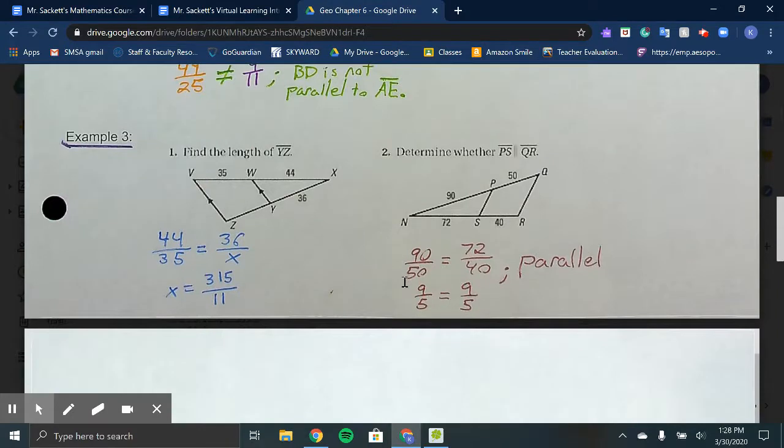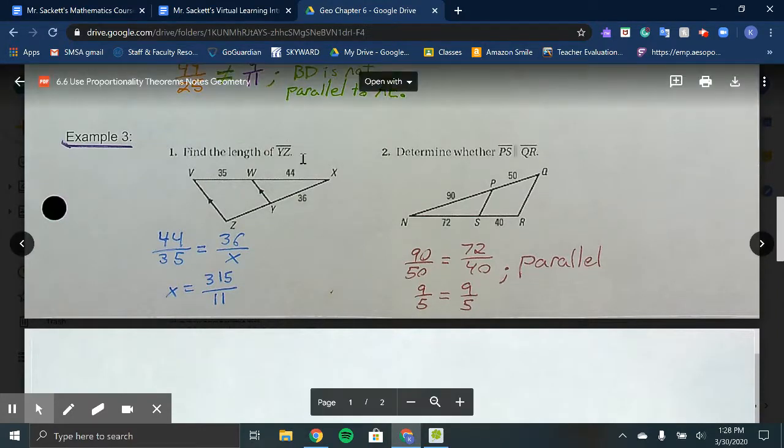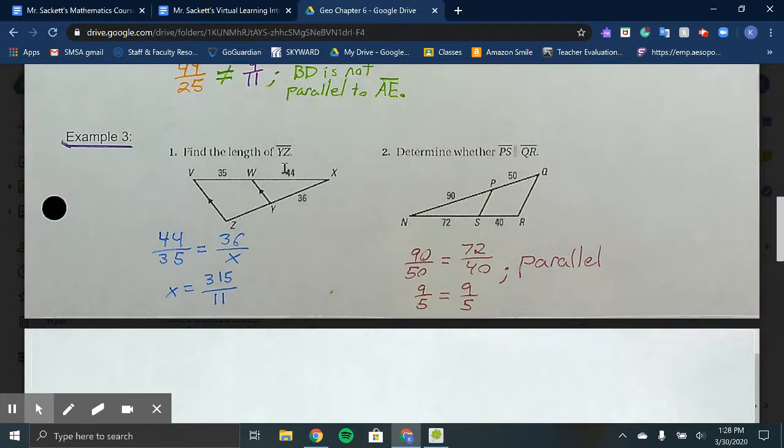In Example 3, they ask you to find the length of YZ. Same idea with our proportion. We want to set up WX over VW, and then YX over YZ, which we're trying to figure out. Cross multiply and divide, and it would be 315 over 11. Feel free to write that as a decimal or leave it as the fraction.